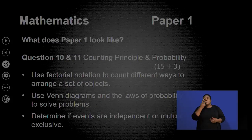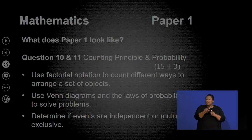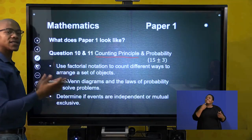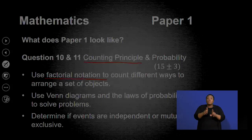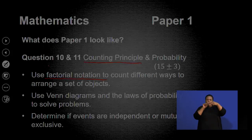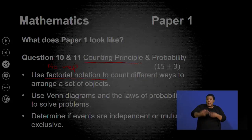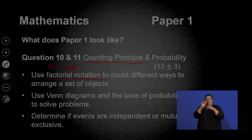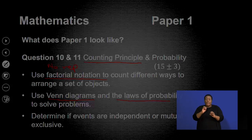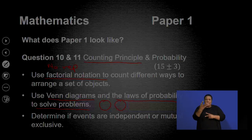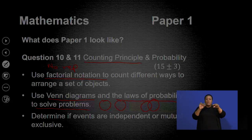Questions 10 and 11 are mainly counting principles and probabilities. Counting principles: if you want to arrange a certain word in a specific order, that's what we're talking about. We also talk about a factorial — remember, to use a factorial it means there is no repetition. If there is repetition, you don't use a factorial. Also, use event diagrams and the laws of probability to solve problems. We have different event diagrams: where events are not intersecting, where they are intersecting, and where three circles are intersecting.